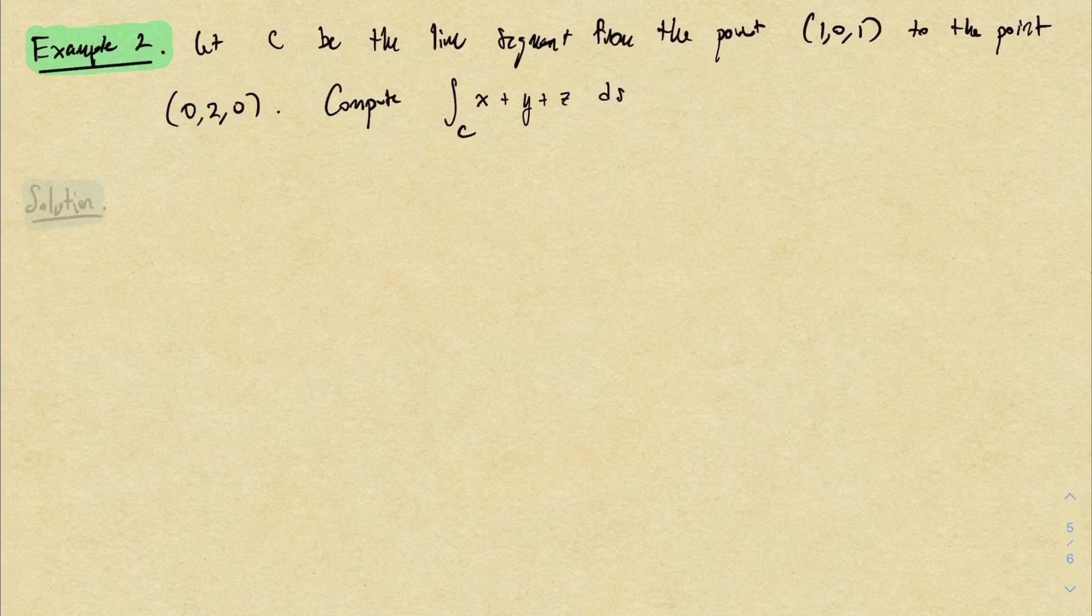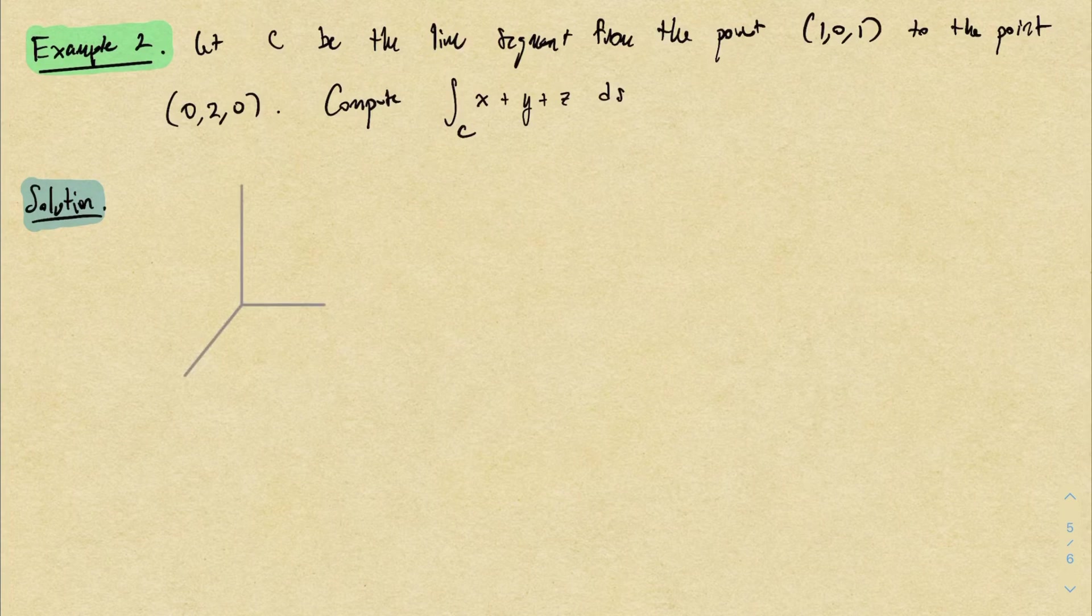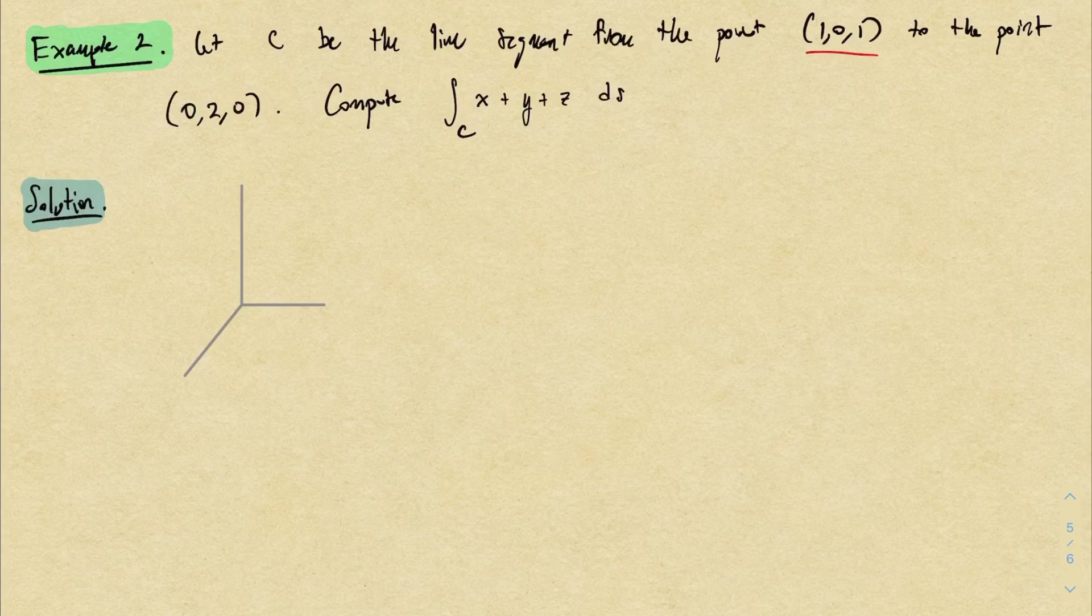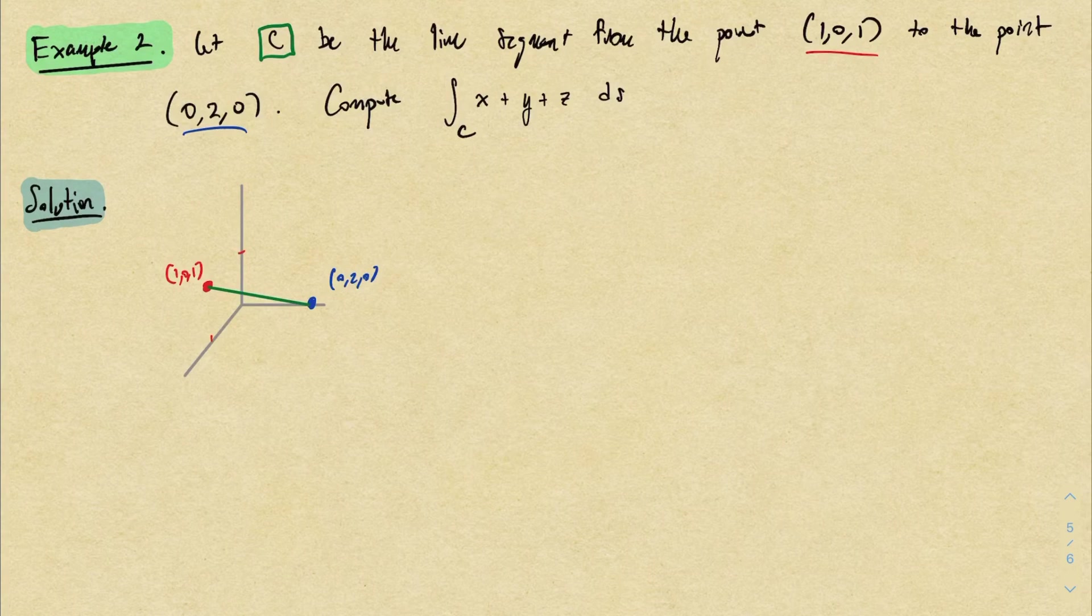So everything's going to be pretty much exactly the same. The only thing that changes is the parameterization, and in these problems that's usually the toughest part. But just as before, let me draw a quick picture. We've got three-dimensional space. The point (1, 0, 1) is maybe here, point (0, 2, 0) is here, and so C is this line segment.